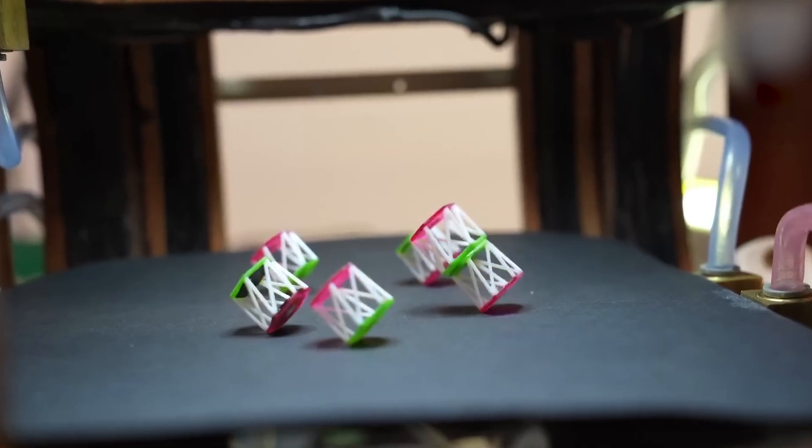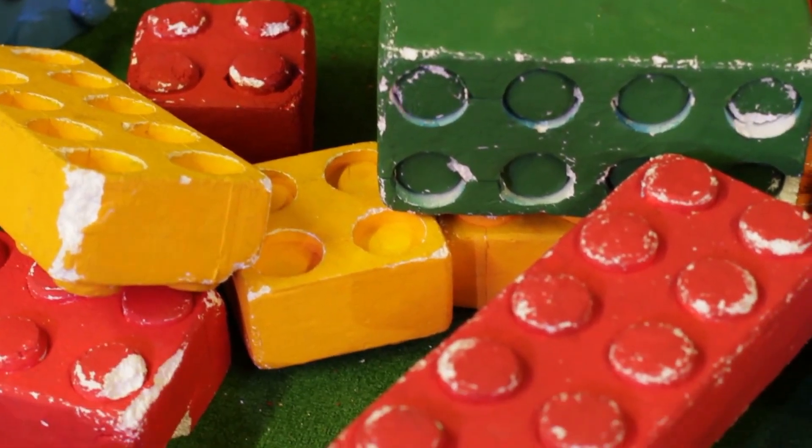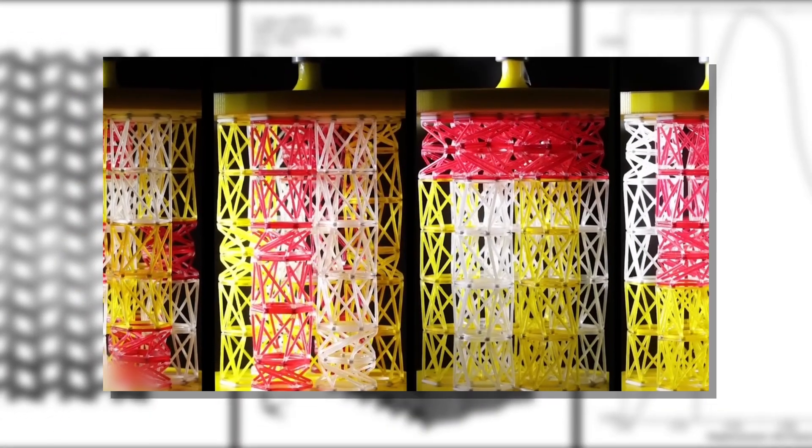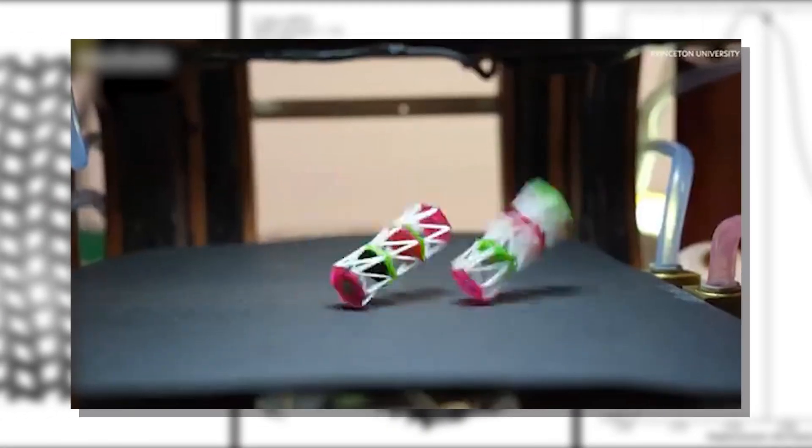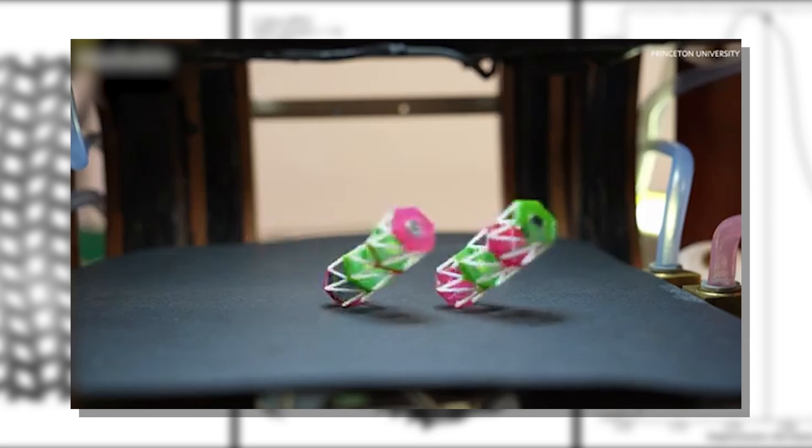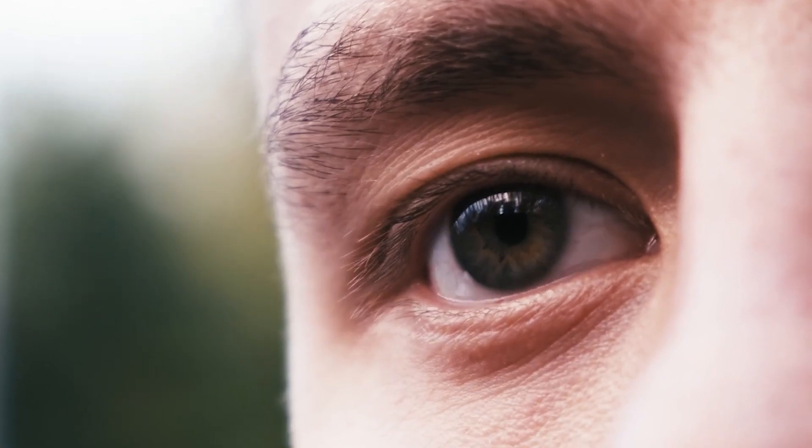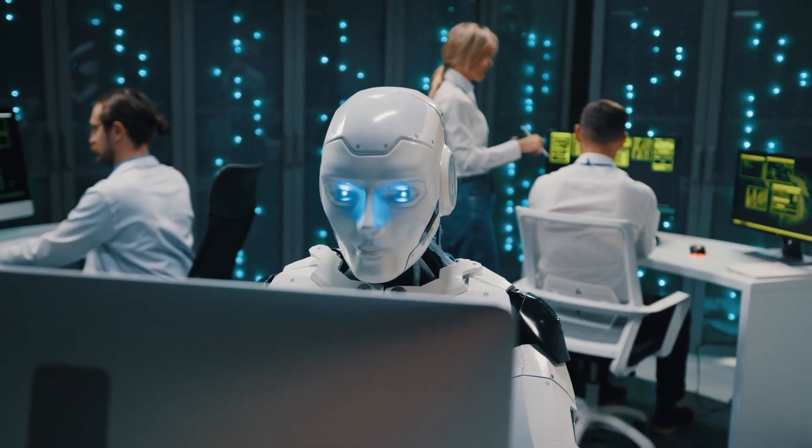And it's really small. Each unit is about the size of a Lego block. But when stitched together into chains or lattices, they can perform cooperative motion. One part's twist becomes another's collapse.